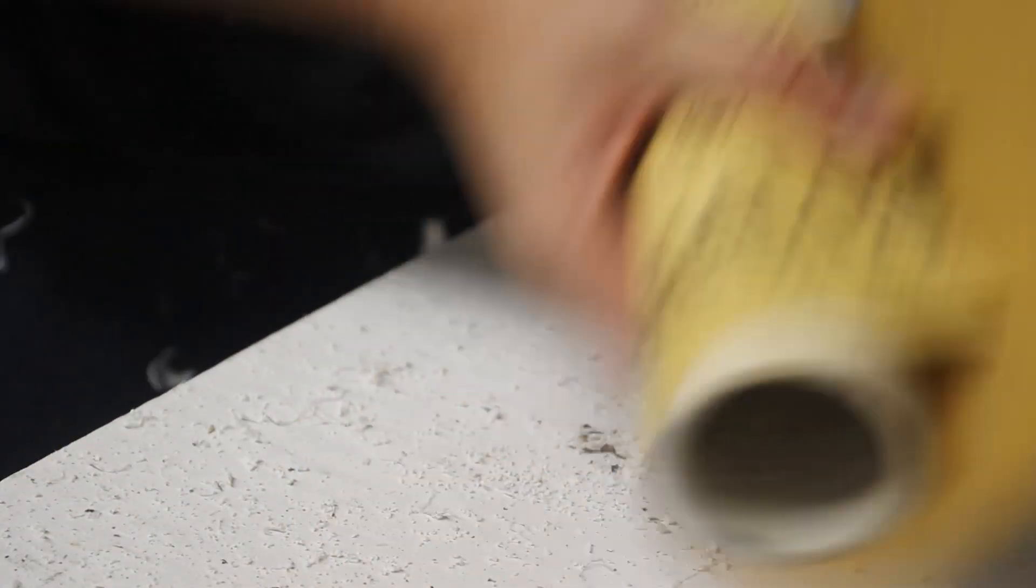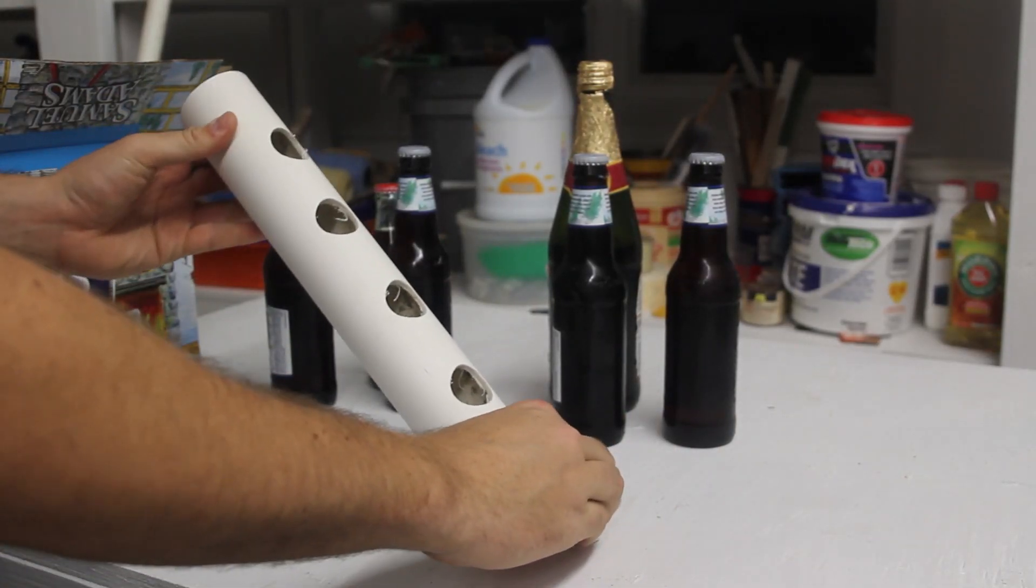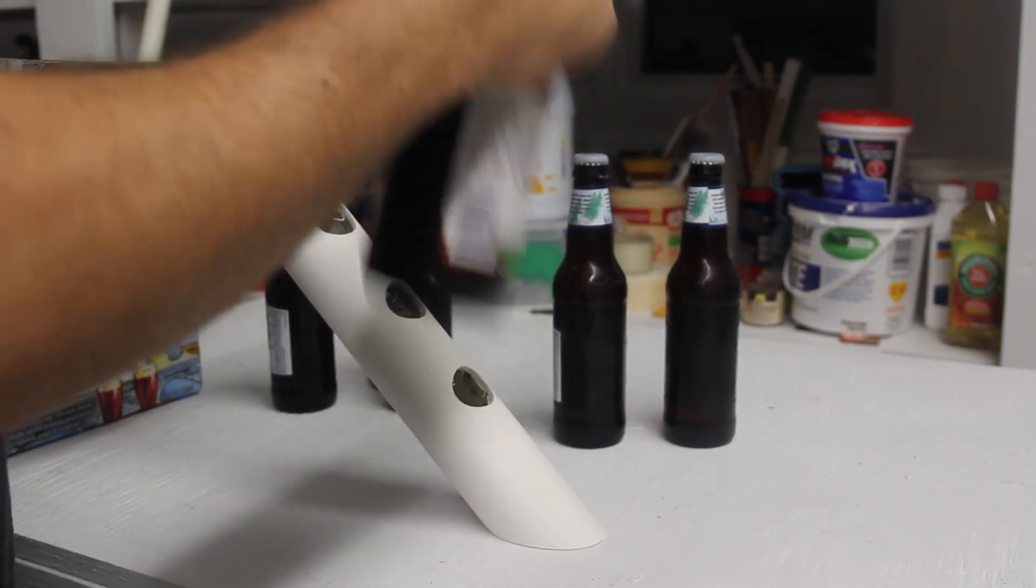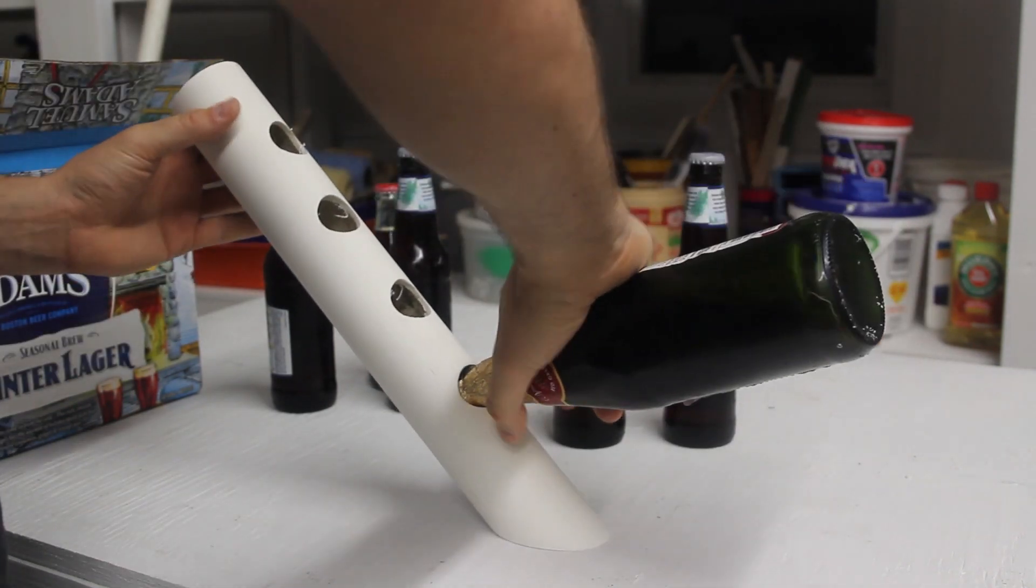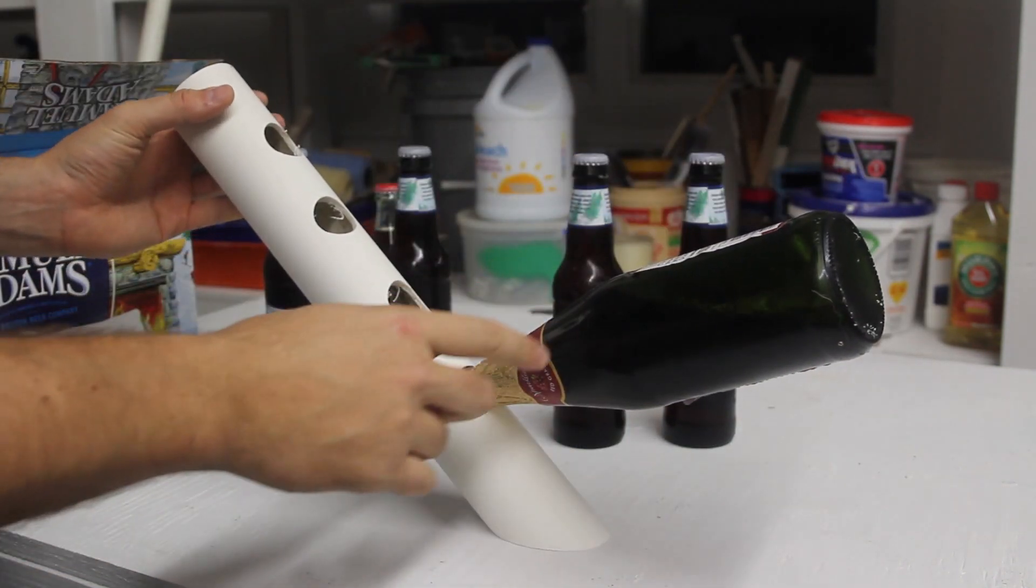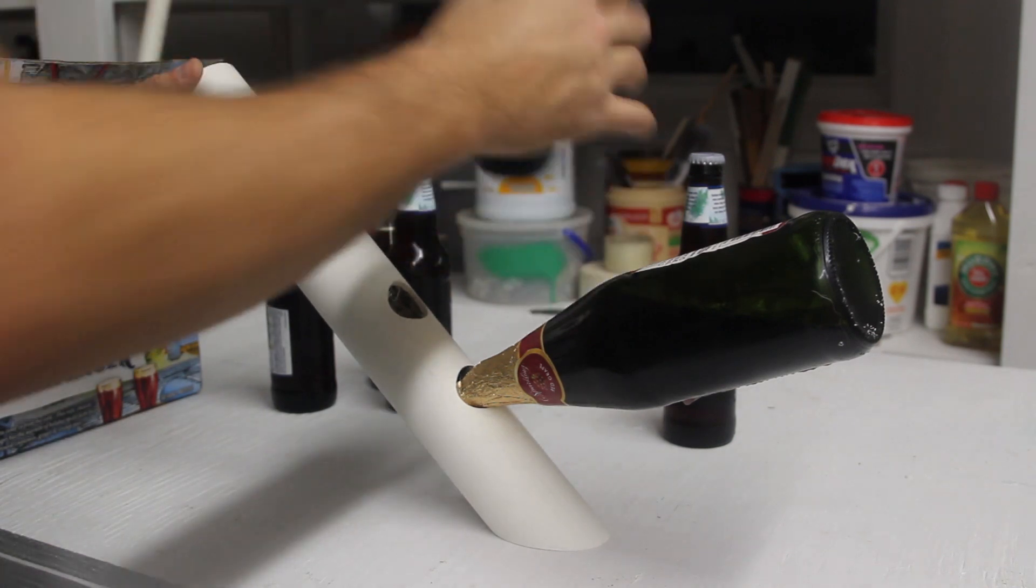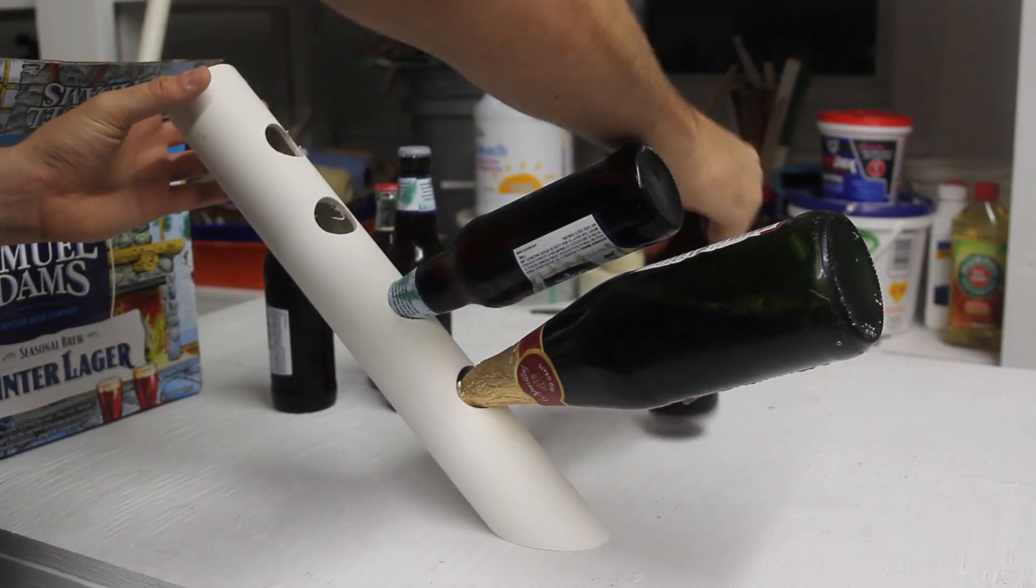We're just gonna use some sandpaper to clean it up. And now, this is like anti-gravity drink stand, whatever you wanna call it. First one, you probably wanna put a bigger one, you don't have to, but then you can put it like that.